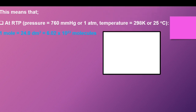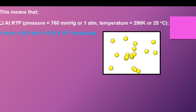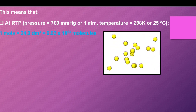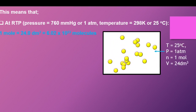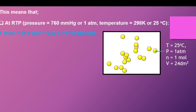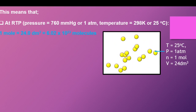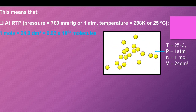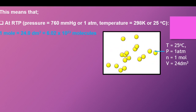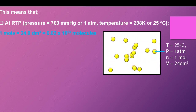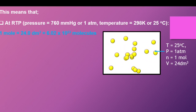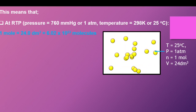For example, if this container contains a certain gas at a temperature of 25 degrees Celsius and one atmosphere of pressure, and it contains 1 mole, that means that 1 mole is occupying the volume of 24 cubic decimeters.